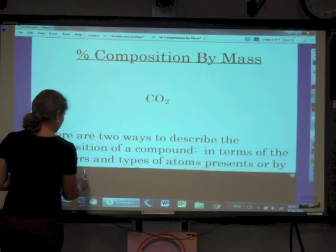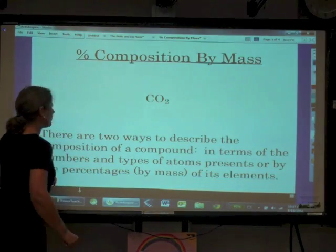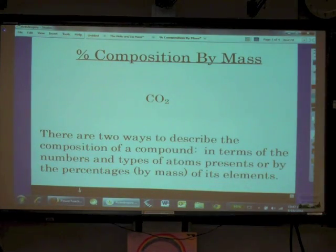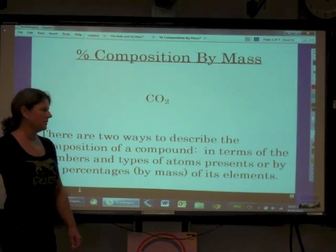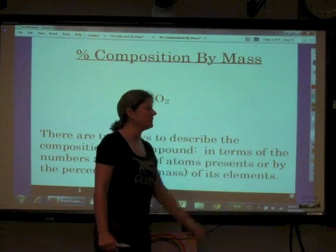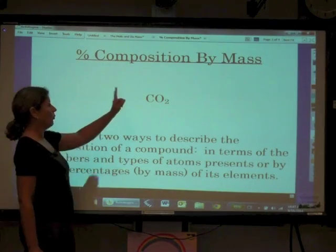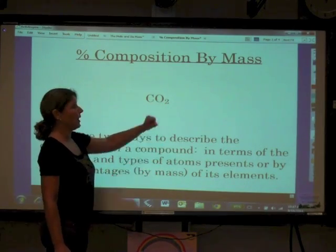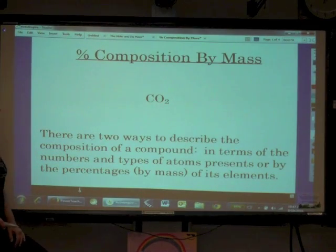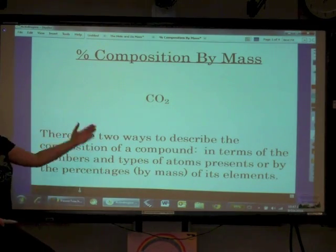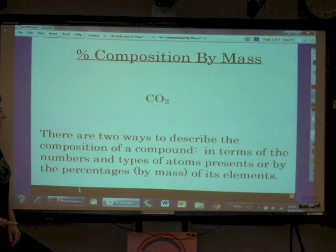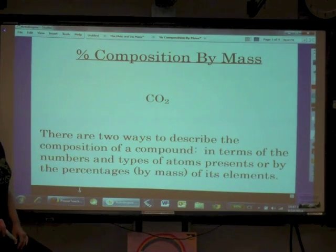Let's just write this down. There are two ways to describe the composition of a compound. Number one, in terms of the numbers and types of atoms present. Like I said, one atom of carbon, two atoms of oxygen. Or we can describe the composition of this thing in terms of the percentages by mass of its elements.